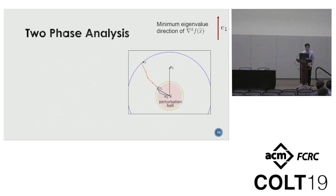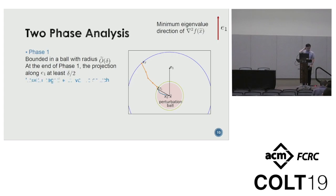With stabilization, the process of escaping saddle point can be divided into two phases. In phase one, we show that the iterates will be bounded in a ball with radius O(θδ). At the end of phase one, the projection along the decreasing direction e_1 will be at least delta over 2. Why is this interesting? You can think of phase one as an implicit negative curvature search, because the end point of phase one is roughly aligned with the decreasing direction. In phase two, starting from a good initial point provided by phase one, the iterates will just escape along the e_1 direction.